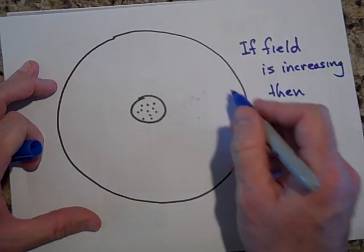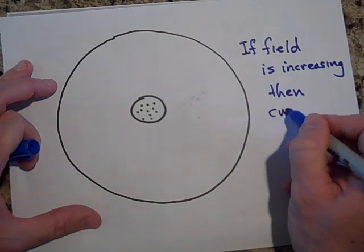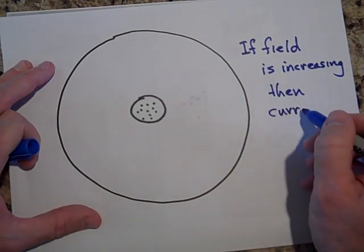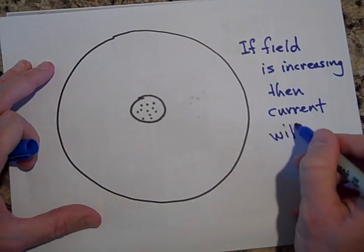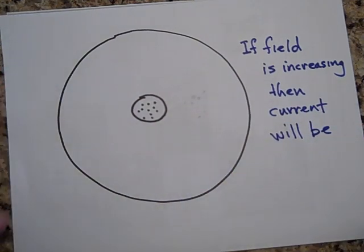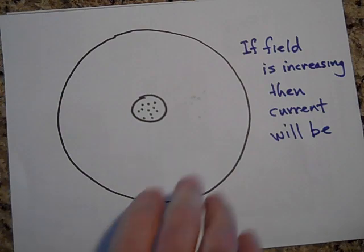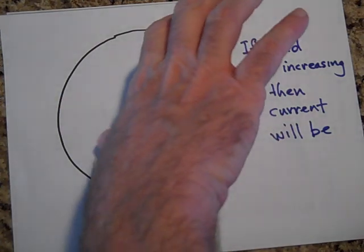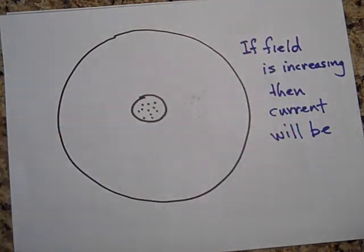Then the current around here, then the induced current will be, let's see, it's going to try and make X's, right? To stop the dots from increasing. So it's going to try and make a current this way.